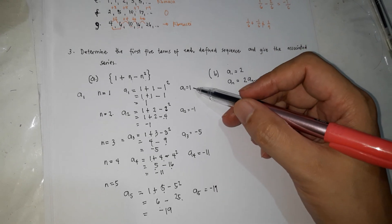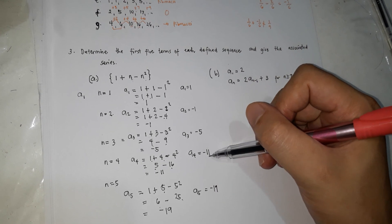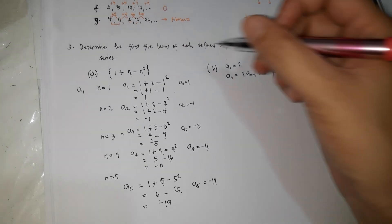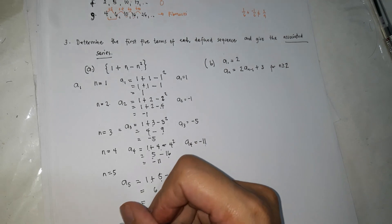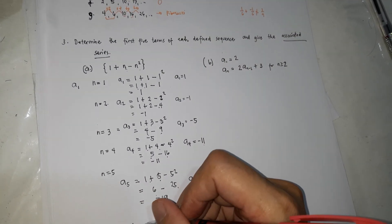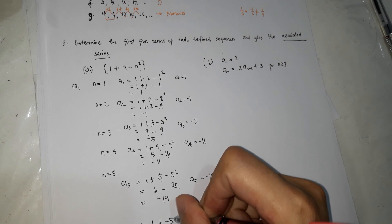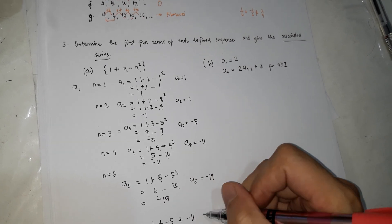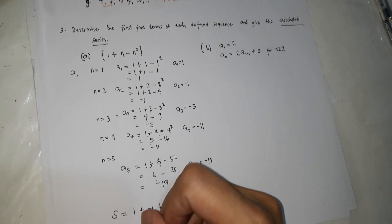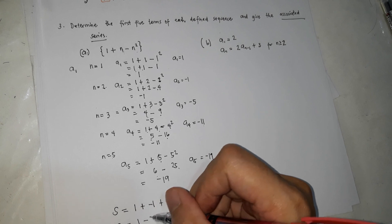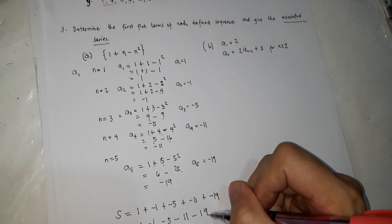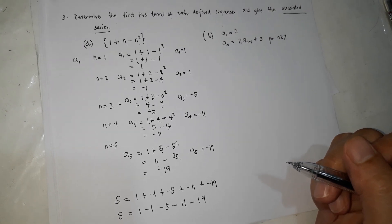So the first five terms are 1, negative 1, negative 5, negative 11, and negative 19. The associated series is: 1 plus (negative 1) plus (negative 5) plus (negative 11) plus (negative 19), or simply written as s = 1 minus 1 minus 5 minus 11 minus 19.